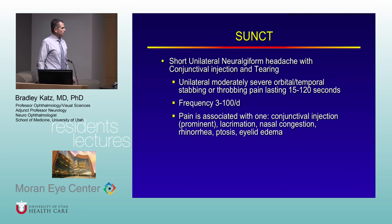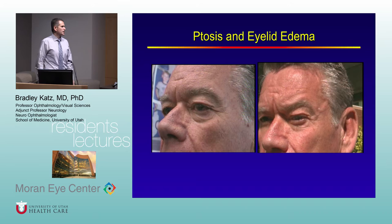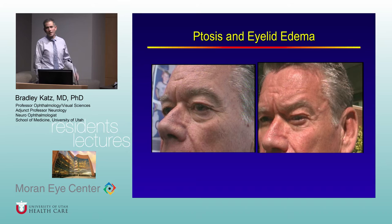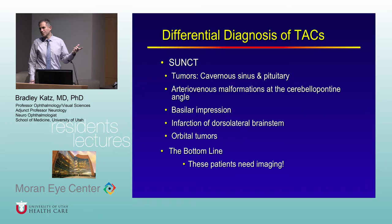SUNCT (Short-lasting Unilateral Neuralgiform headache with Conjunctival injection and Tearing) is unilateral pain with autonomic symptoms lasting under two minutes, occurring multiple times throughout the day. There is a broad differential diagnosis for the trigeminal autonomic cephalalgias, because several serious conditions can mimic these syndromes. The bottom line is that all these patients need to be imaged to rule out a secondary cause.